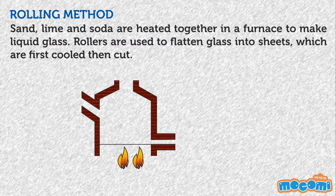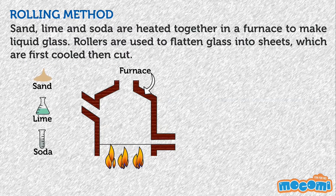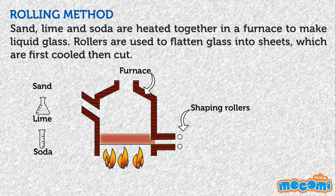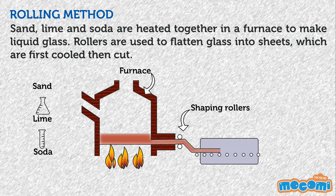Rolling: Sand, lime and soda are mixed together in a furnace to make liquid glass. Rollers are then used to flatten the glass into sheets, which are first cooled and then cut.